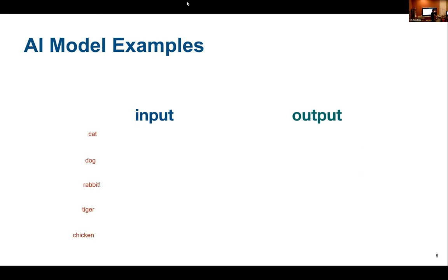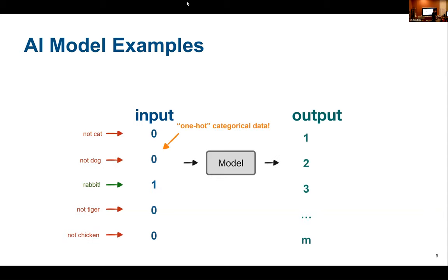If we want to encode something more complex — for example, cat, dog, rabbit, tiger, chicken — which are not numeric, we can look at something called one-hot categorical encoding. This type of data is used when we have categories that are mutually exclusive. We use zero to represent something the input is not, and one to represent something that the input is.